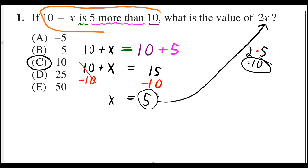Let's change this part of the sentence into this equation. It says 10 plus x is, for is I can put an equal sign, 5 more than, well that's going to be 5 plus something, 5 more than what? 10. So 5 plus the 10.